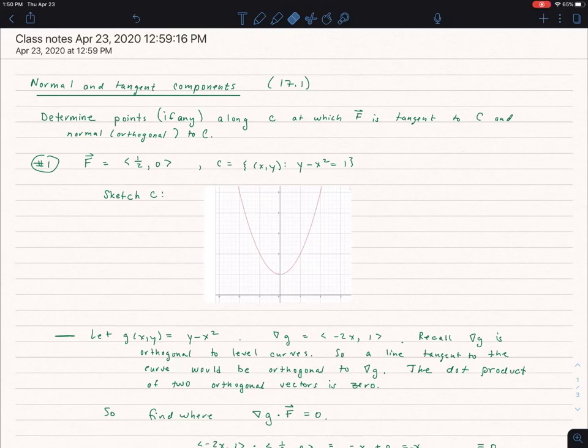I wanted to do a quick video explaining some of the homework questions in 17.1 when we're being asked to find points, if any, along the curve C at which a given F is either tangent to C or orthogonal to C.